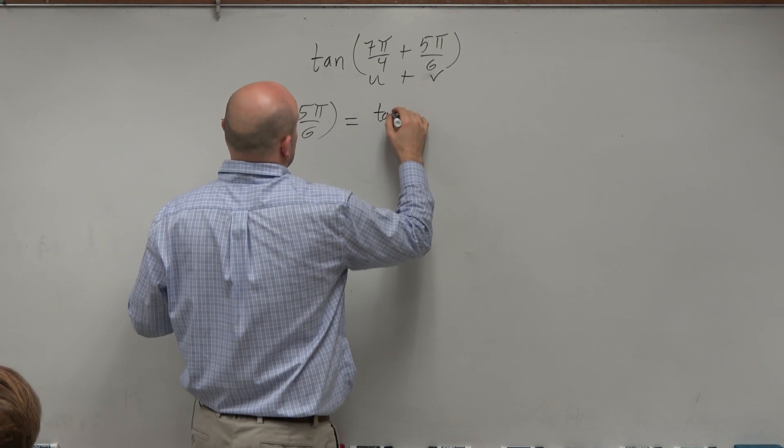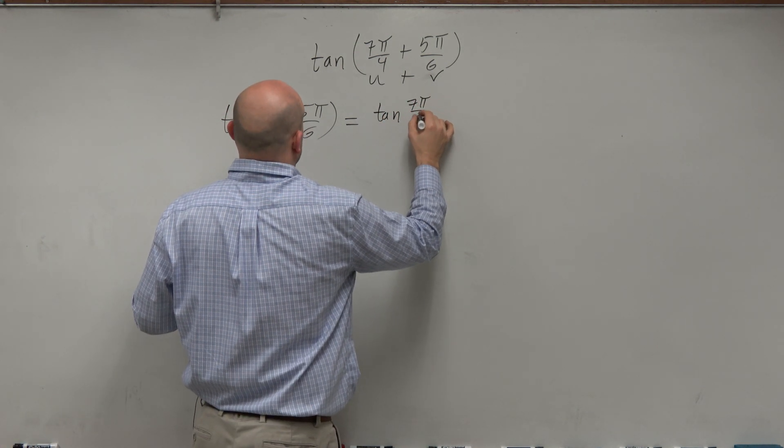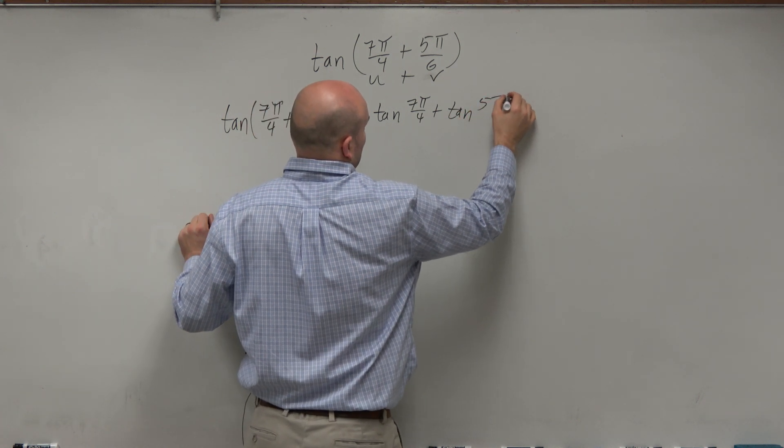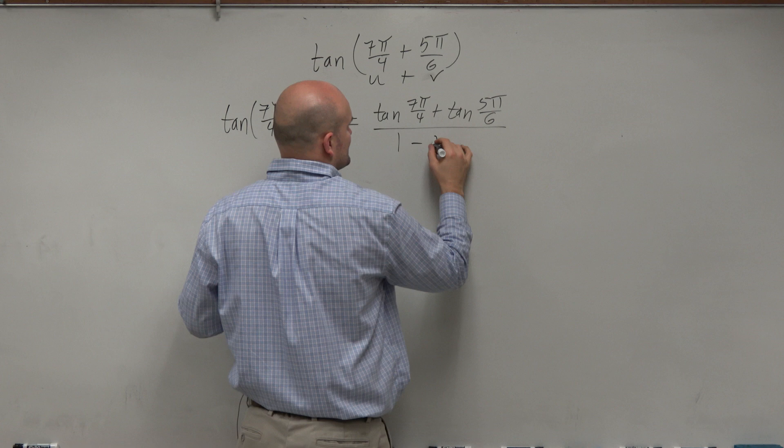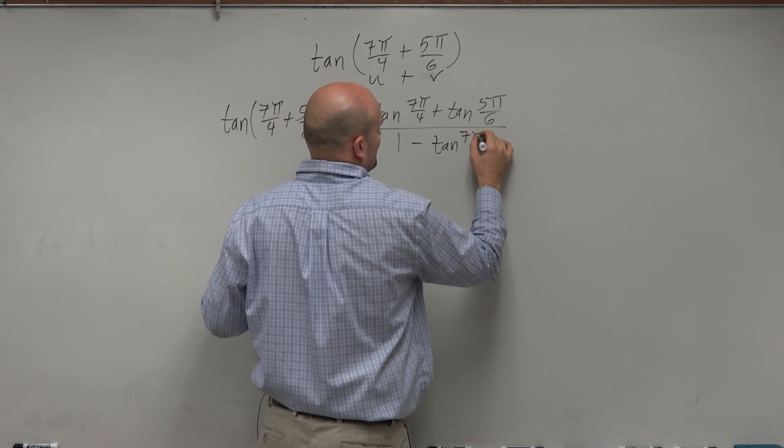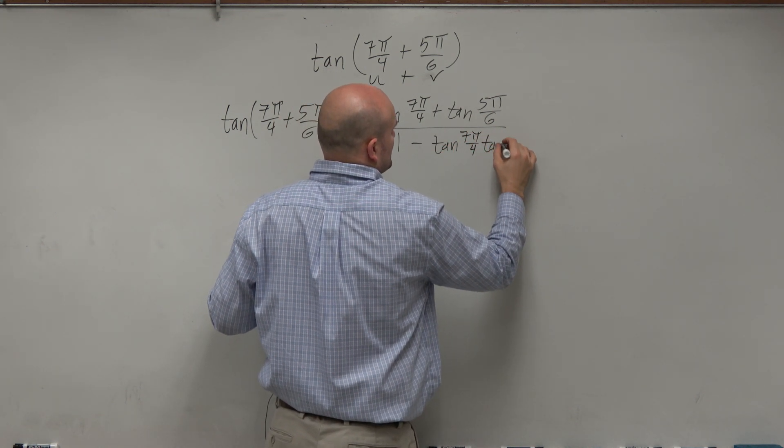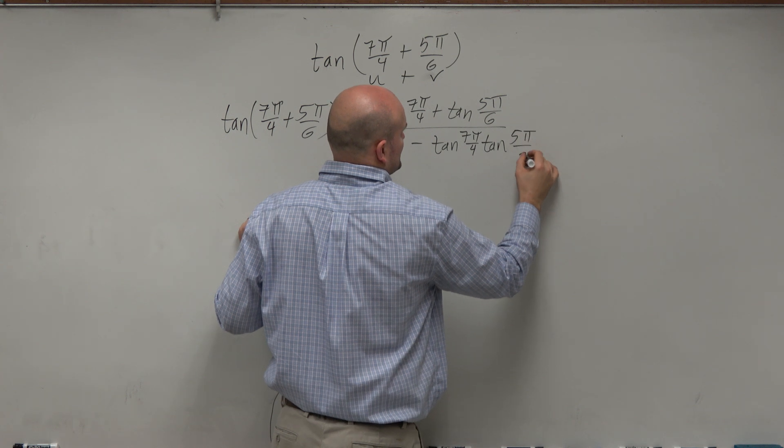So this is the tangent of 7π over 4 plus tangent of 5π over 6 all over 1 minus tangent of 7π over 4 times the tangent of 5π over 6.